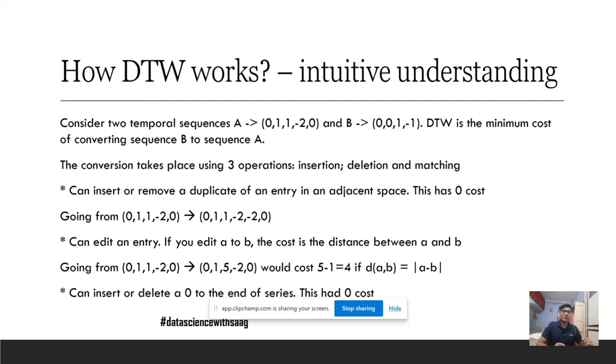There are certain guidelines or principles relating to these three operations. What are the guidelines associated? We can insert or remove a duplicate of an entry in an adjacent space. This has zero cost. For example, going from (0,1,1,-2,0) to (0,1,1,-2,-2,0), we are inserting a duplicate. Now, this would have a cost of 0.